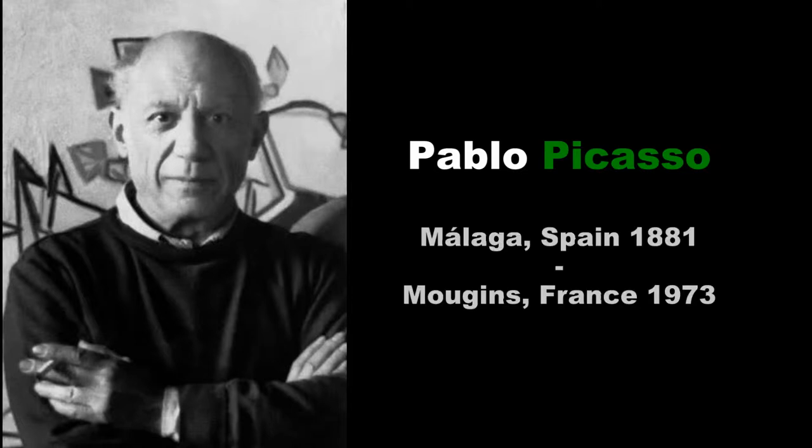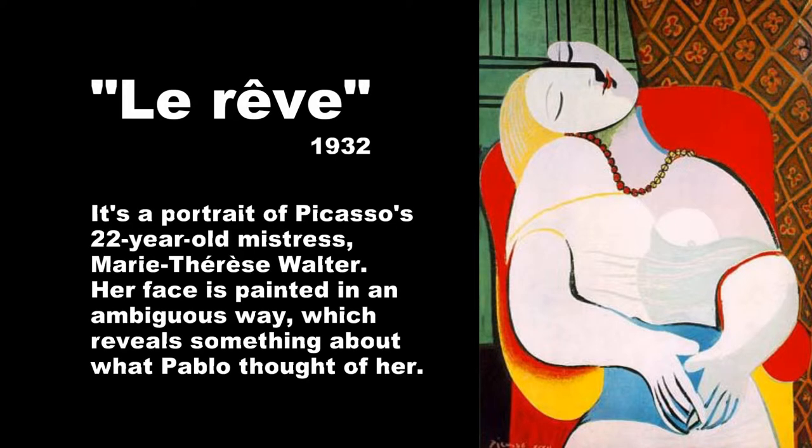This is Pablo Picasso, one of the best-known artists in the world. He was born in Spain in 1881 and died in 1973 in France. And even if you don't know anything at all about art, you have probably heard his name. This is a painting he made in 1932. It's called Le Rêve, which means the dream. And he sold it in 1941 for $7000.